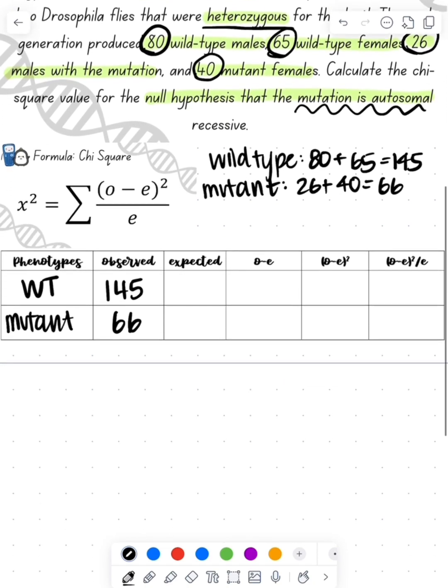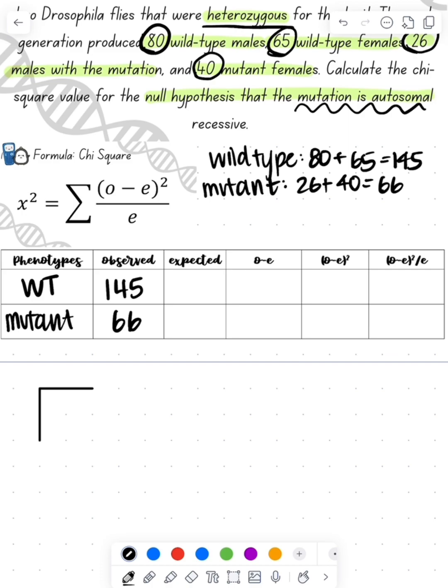Then we need to look and say, okay, well, they're heterozygous parents, so what would I expect? We're going to do a Punnett square between two different individuals that are heterozygous. I'm just going to use A just for easy-peasy. We're going to see that three-fourths of them are going to be wild-type, and then one-fourth of them are going to be mutants.